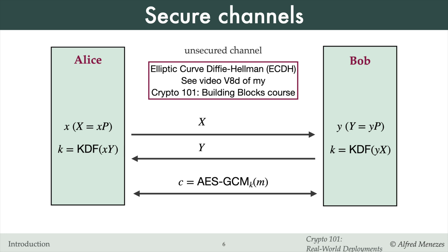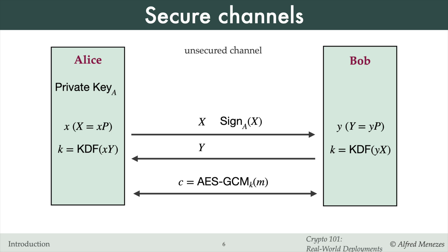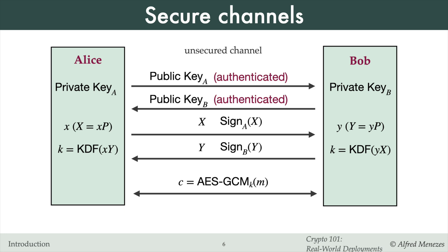To prevent a malicious man-in-the-middle attack, Alice and Bob must authenticate the exchanged points. Alice needs assurance that the point Y she received was truly sent by Bob, and Bob needs assurance that the point X he received was truly sent by Alice. This authentication can be achieved by signing X and Y using a digital signature scheme such as RSA or ECDSA. Alice signs X using her private signing key and sends X along with the signature to Bob. Bob signs Y using his private signing key and sends Y along with his signature to Alice. Each then verifies the other's signature using the corresponding public verification key.